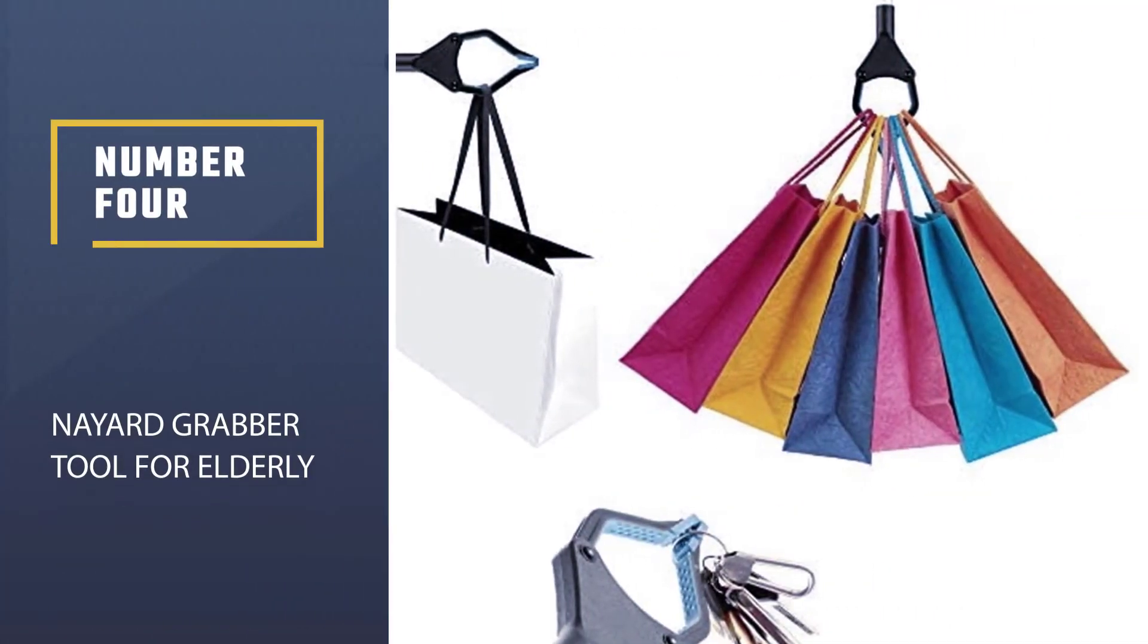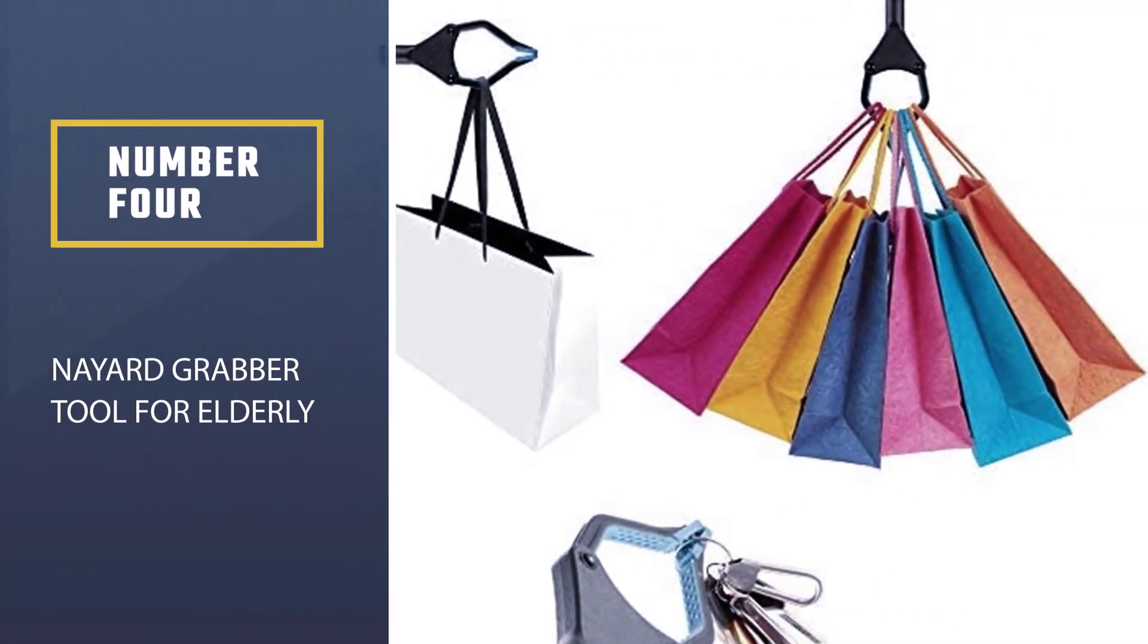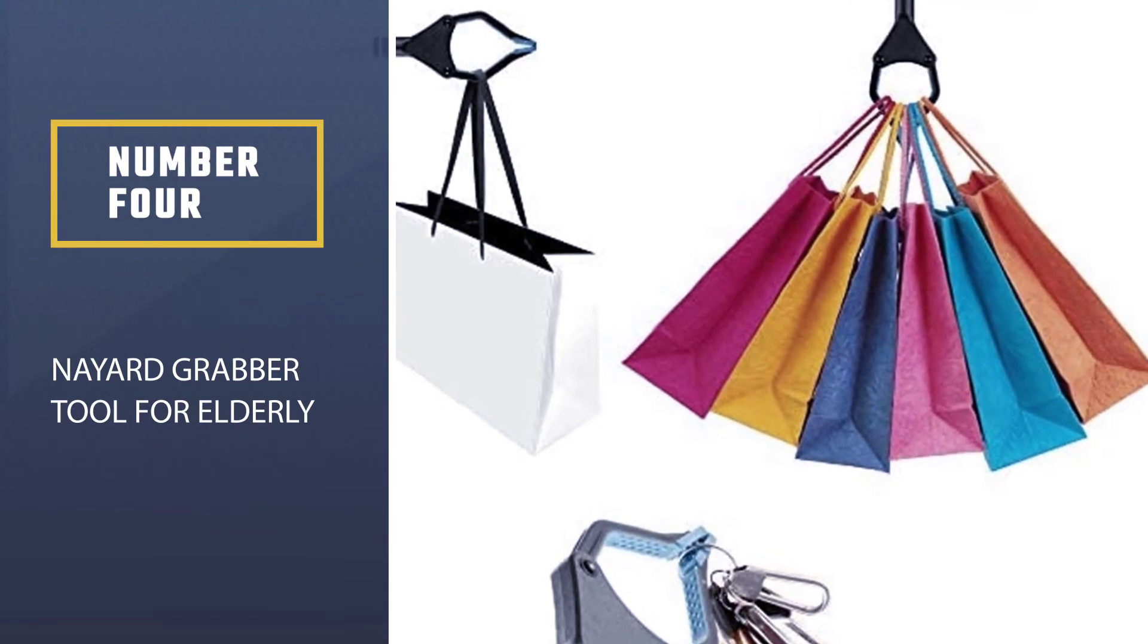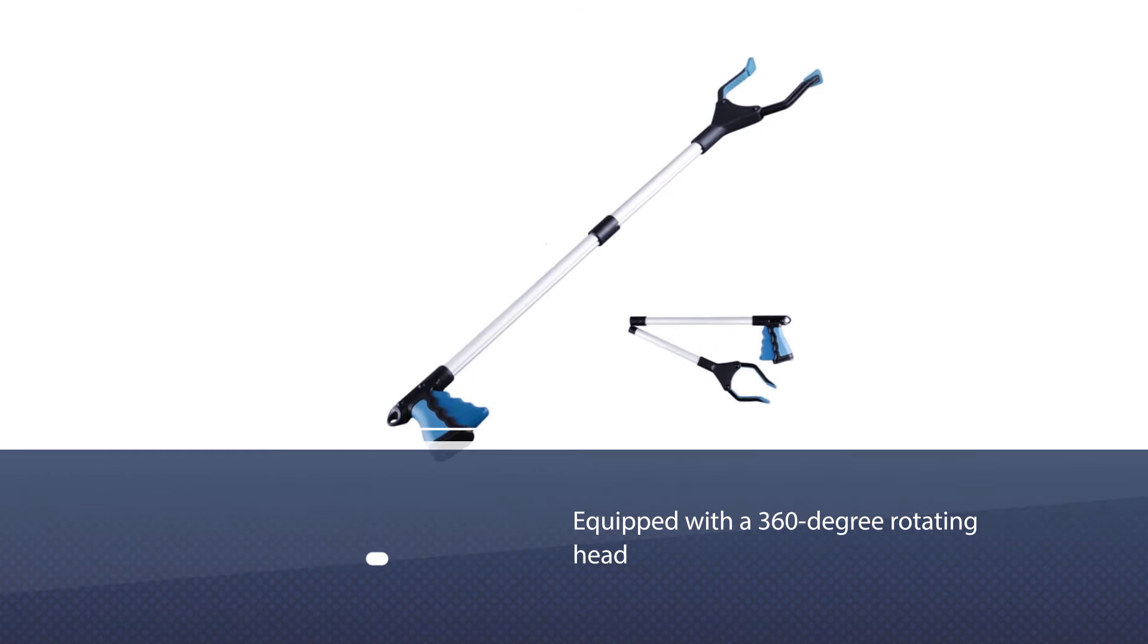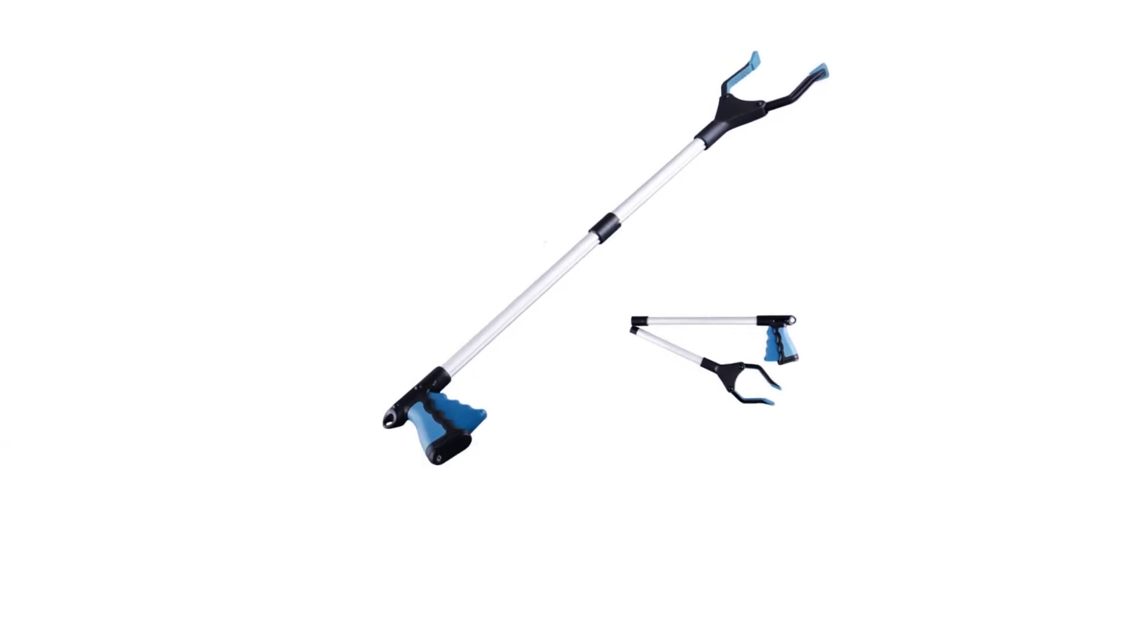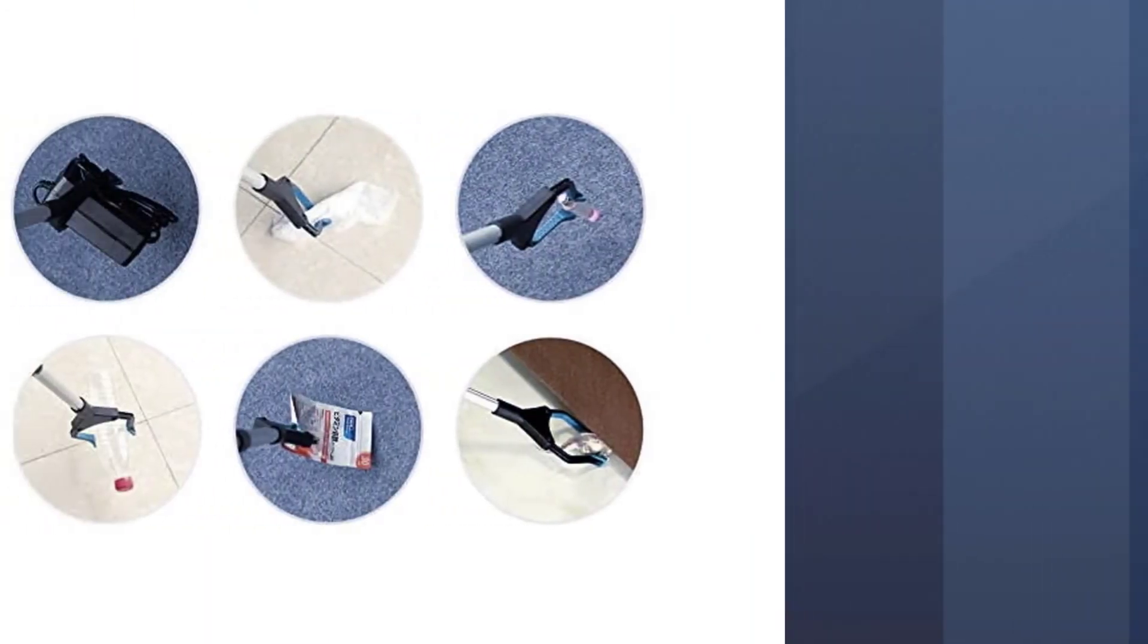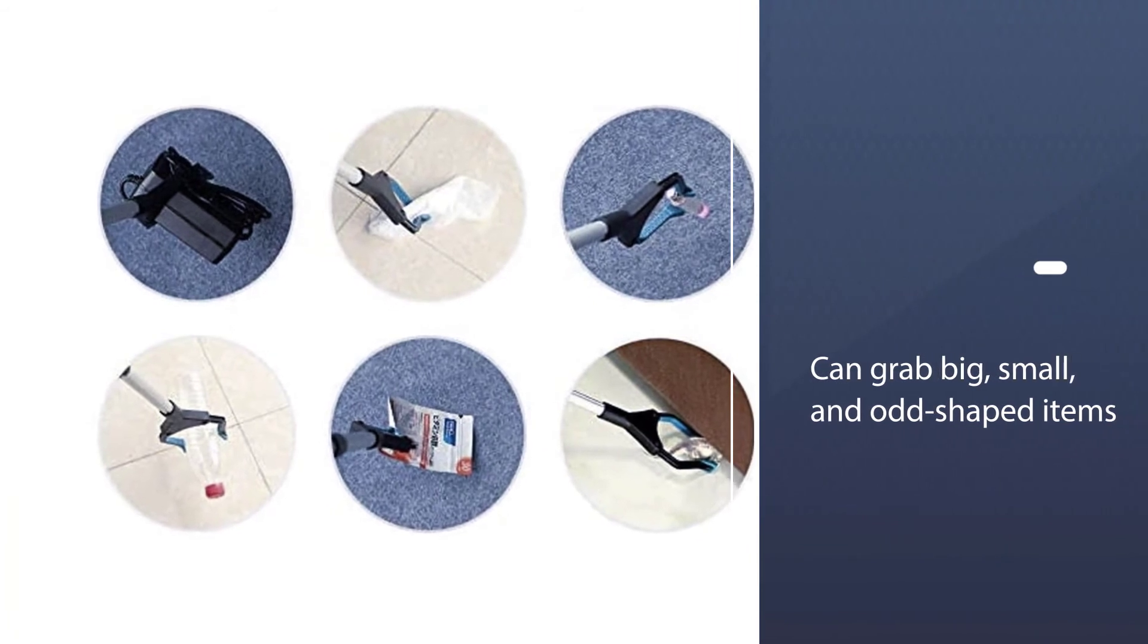Number four, NAYARD Grabber Tool for Elderly. The NAYARD grabber reacher tool eliminates the need to squat, bend, or compromise your safety to grab things that are out of reach. It's equipped with a 360 degree rotating head that can grab big, small, and odd shaped items.